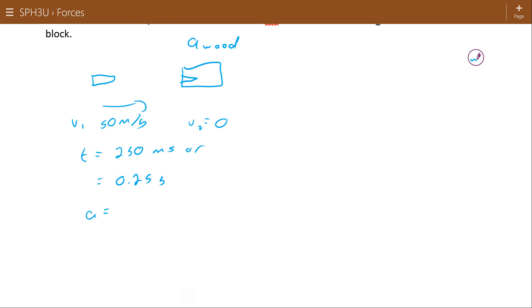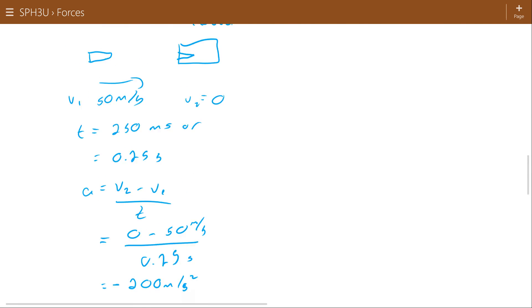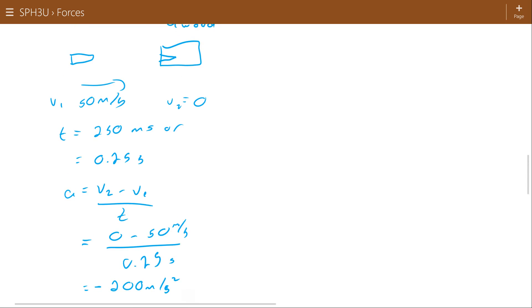So a little kinematics first. A equals V2 minus V1 over T. Zero minus 50 divided by 0.25. Works out to be 200 meters per second squared, negative meters per second. Okay. So if I have a 50 gram bullet, remember in physics we always go to kilograms, with an acceleration of negative 200 meters per second squared, then the force that must be being applied to cause that, we can do that with Newton's second law.